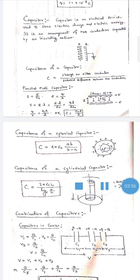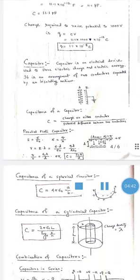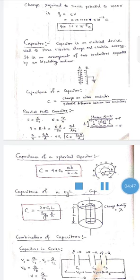A capacitor is an electrical device which can store electric charge and electric energy. It is an arrangement of two conductors separated by an insulating medium, where one conductor is grounded. The capacitance of a capacitor C is the charge on either conductor divided by the potential difference between the two conductors — unlike a single conductor where we use potential alone.